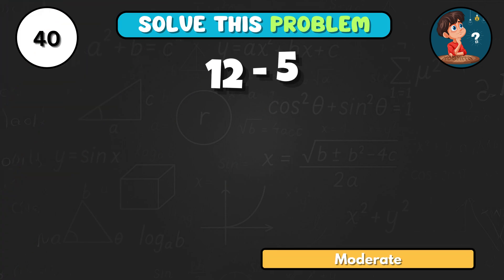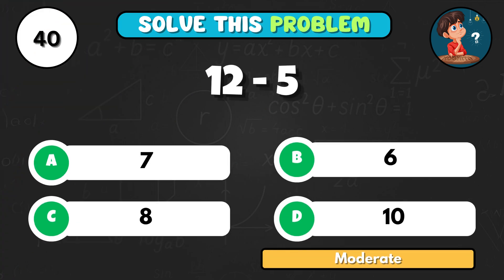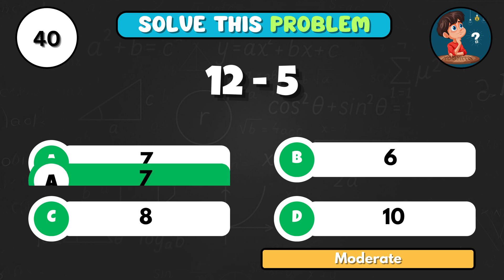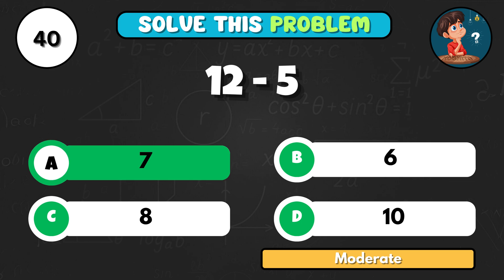12 reduced by 5 equals what? The correct answer is A7.